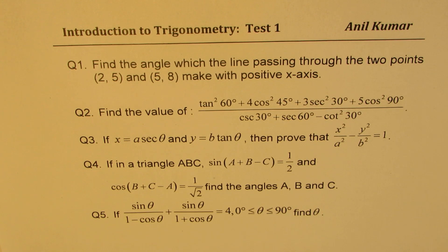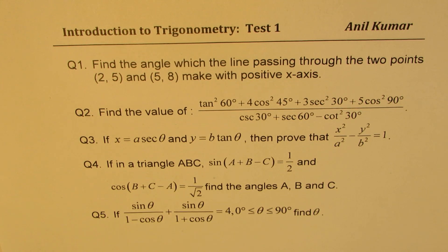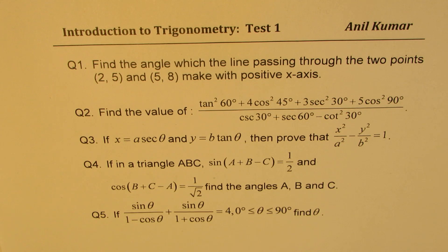Question one: find the angle which the line passing through the points (2, 5) and (5, 8) makes with the x-axis. In this particular case, you can find the slope and then tan theta and the angle.